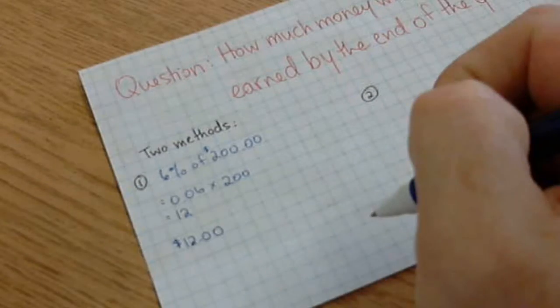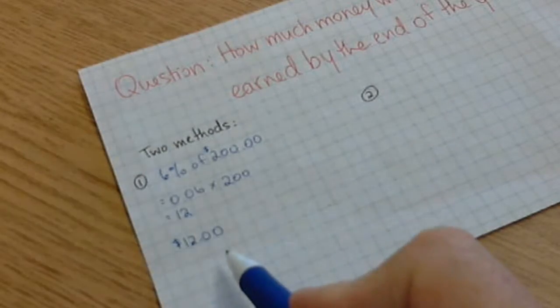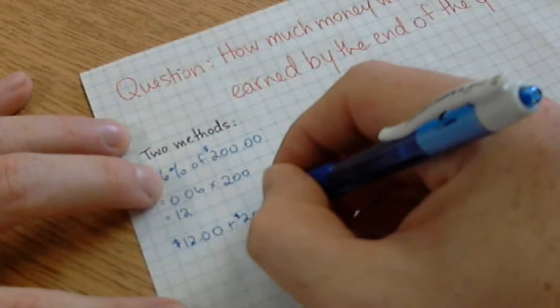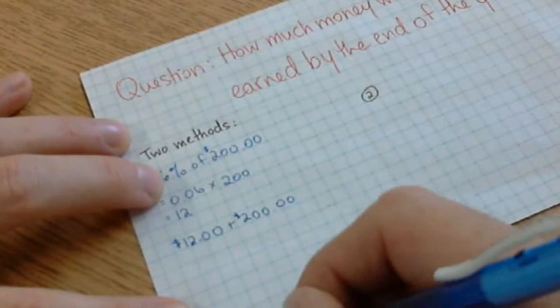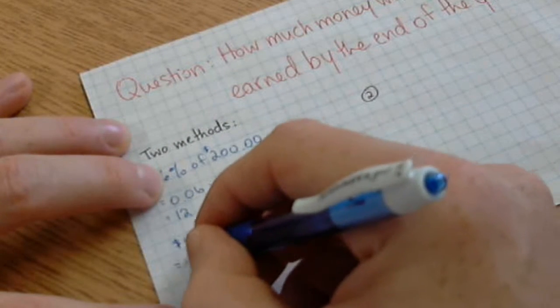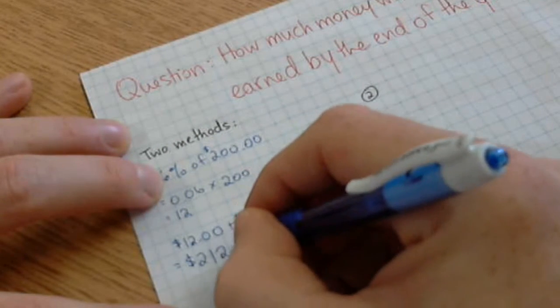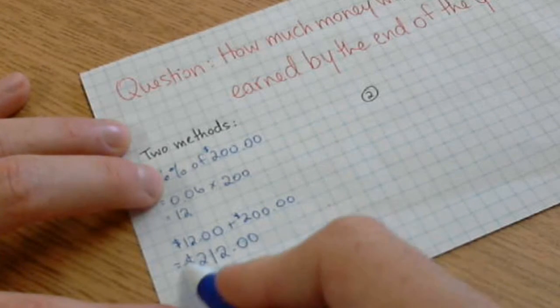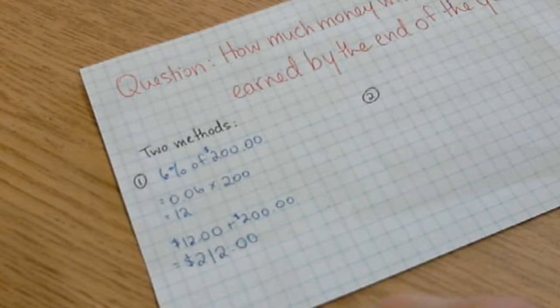She's going to earn $12 in interest on her investment. Then we have to add that to our original amount, which means that by the end of the year she will have $212 in her account. She'll have earned that money on top of the original investment.